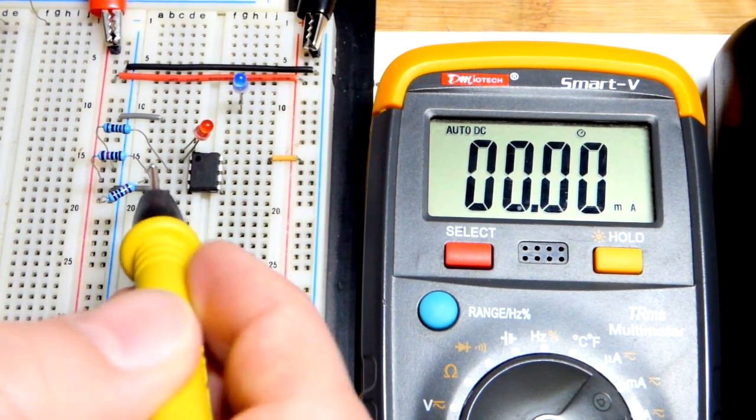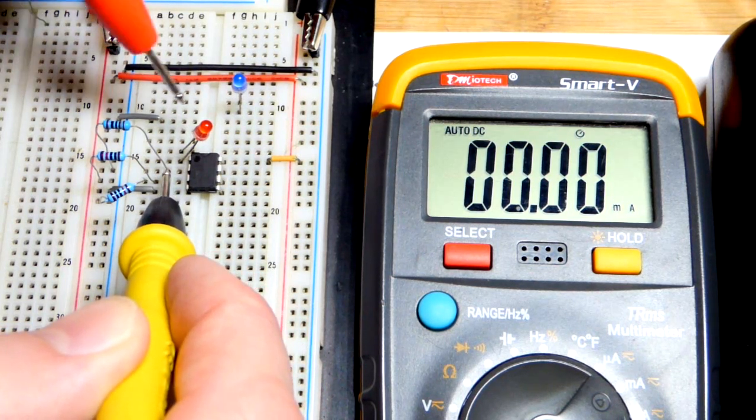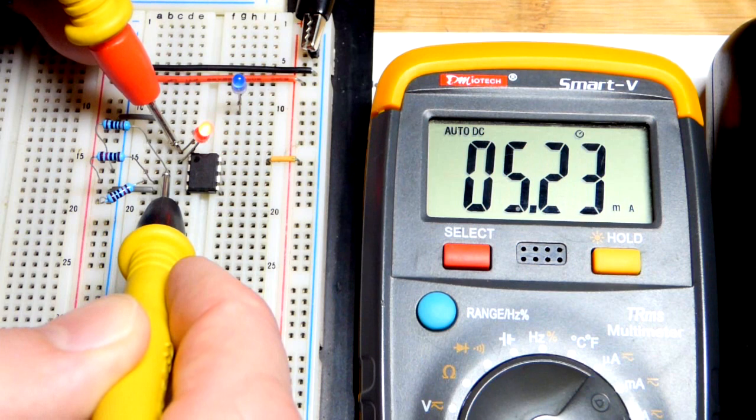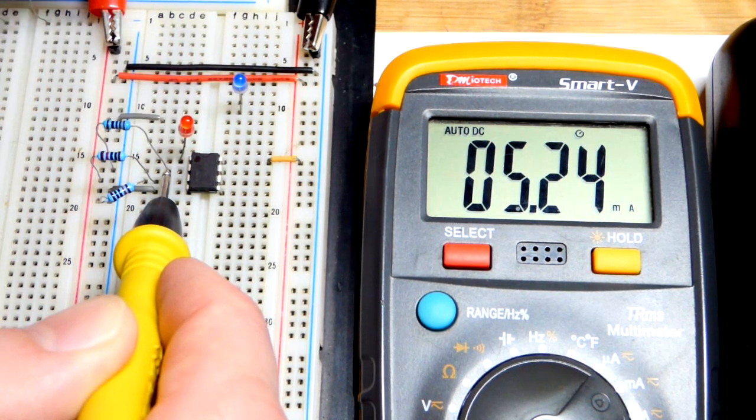So we will put the black probe to the resistor, the current setting resistor, and then the red probe to the cathode right there. And there you can see we've got 5.23 milliamps of current.